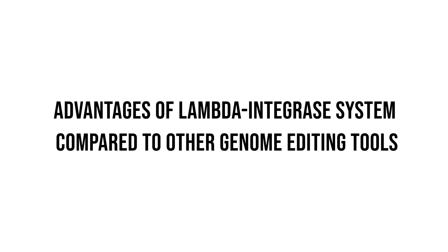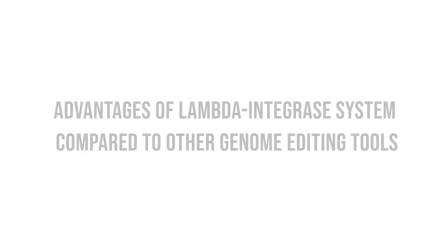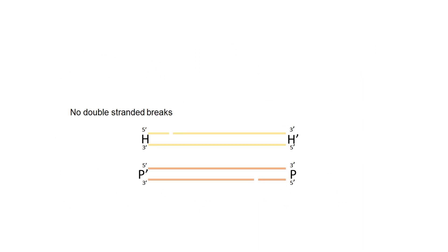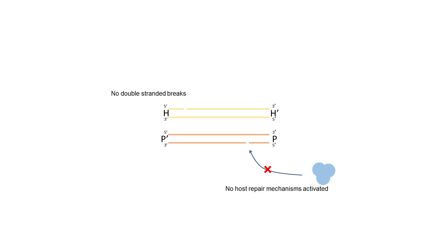There are several advantages of lambda integrase system over other tools. There are no double-strand breaks introduced, unlike other endonuclease-based tools such as CRISPR-Cas9. Therefore, there are no host repair mechanisms being activated, which prevents generation of any mutations or indels in the genome.